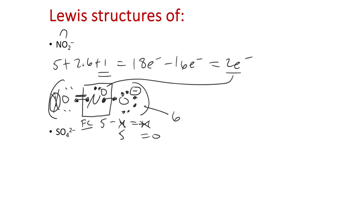Oxygen only needs six for a neutral charge. So the oxygen that has the single bond has a formal charge of 6 minus 7, which is minus one. And the one I've made the double bond with is now 6 minus 6, which is neutral. So I have a neutral oxygen on one side and a negative one on the other.